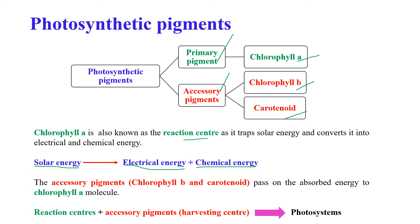The accessory pigments, chlorophyll B and carotenoid, pass the absorbed energy to the primary pigment chlorophyll A. Primary pigment and accessory pigments together are called photosystems.